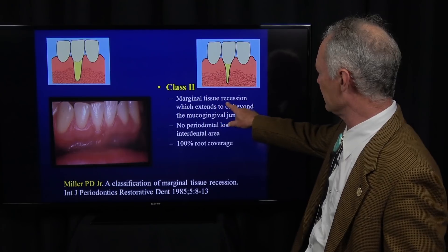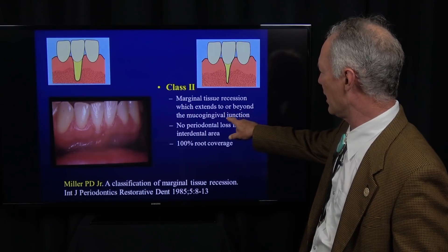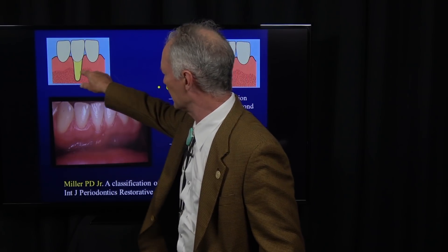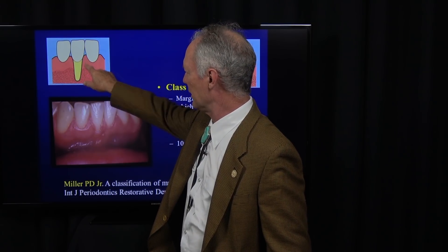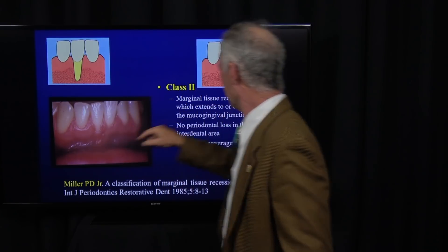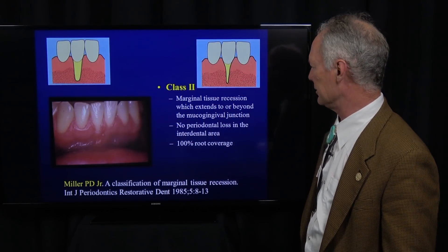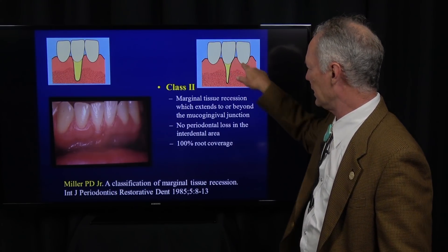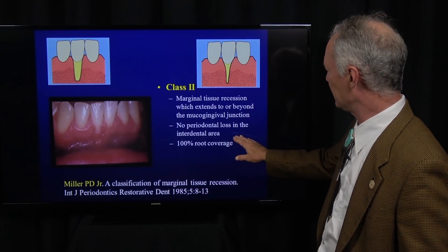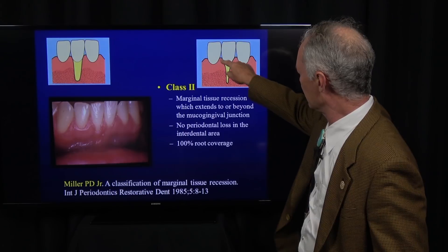Class 2: the marginal tissue recession extends to or beyond the mucogingival junction. Here's the mucogingival line — this is non-attached, non-keratinized tissue, and this is attached keratinized tissue, so it's extending past the mucogingival junction. No periodontal loss in the interdental area, meaning the papilla are normal height and the bone levels are normal. In this case, you would also expect 100% root coverage. The bone and the interdental soft tissue have a lot to do with the success of periodontal gingival grafting.